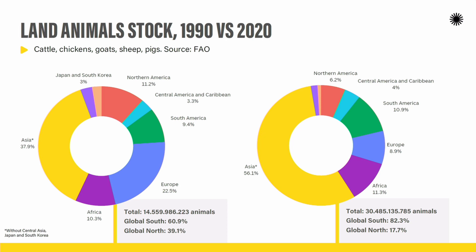Two important notices: Central Asia is not counted here because the FAO doesn't have statistics for Central Asia, so the number for the Global South is probably even larger. And Japan and South Korea are listed separately from the rest of Asia because they are countries of the Global North, not the Global South.